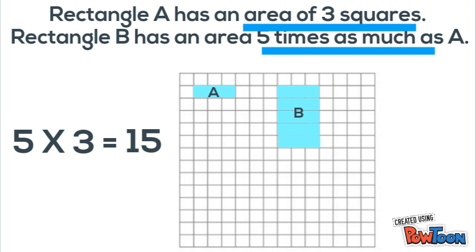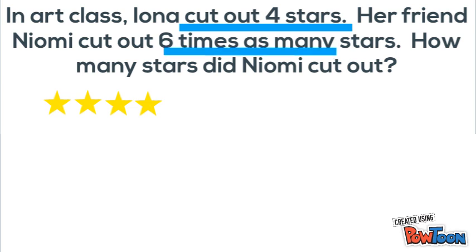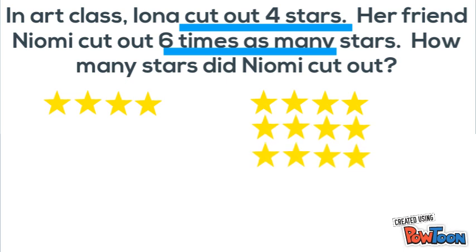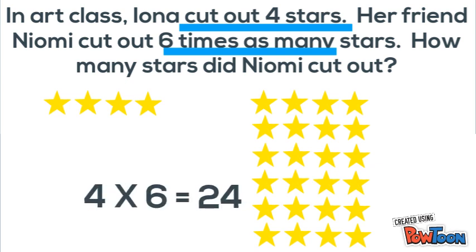Last example: In our class, Ayana cut out four stars. Her friend Naomi cut out six times as many stars. How many stars did Naomi cut out? We start with what we know — Ayana had four stars. We're told Naomi had six times as much. So if we made six repeated additions of what Ayana had, we'd get what Naomi had. Or we could do the simplest thing: multiply four times six, which gets us 24.